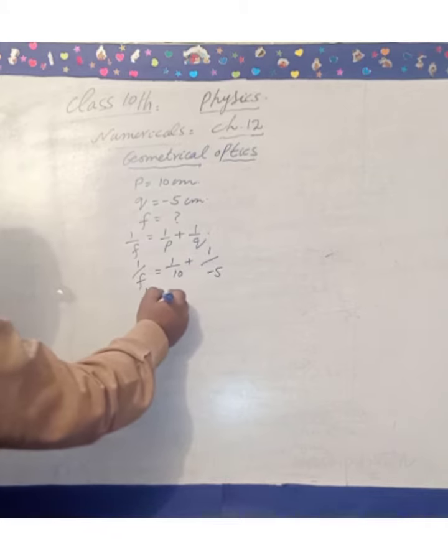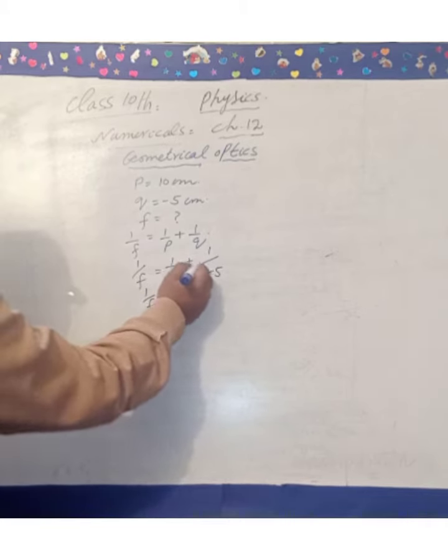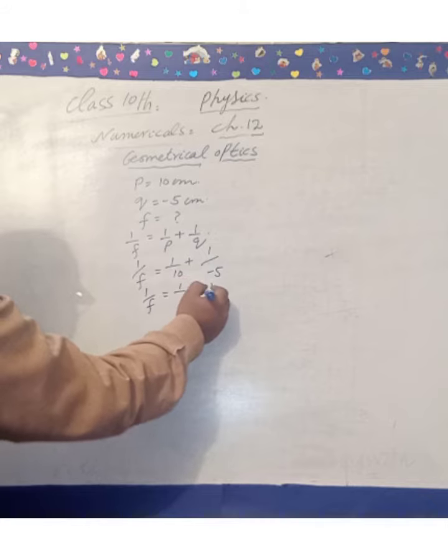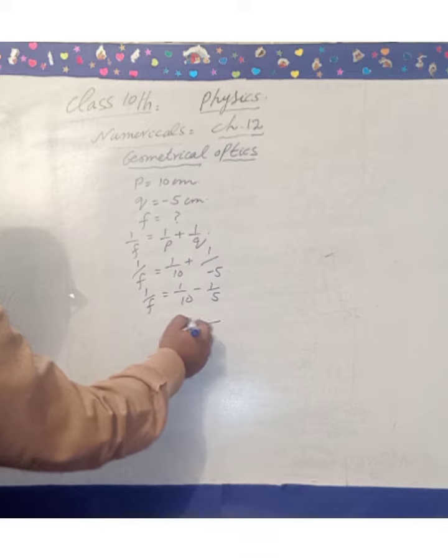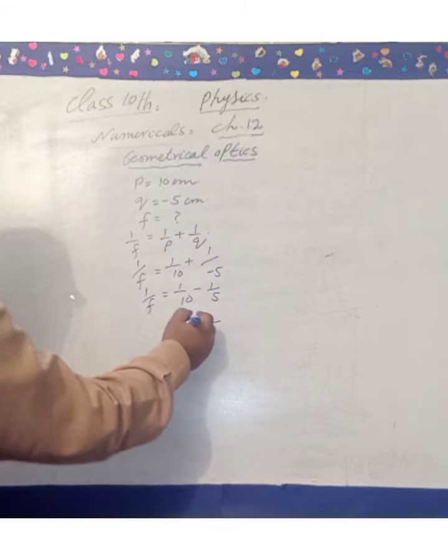1 over f is equal 1 over 10 plus minus minus 1 over 5. We have this LCM, 10. 1 over f.